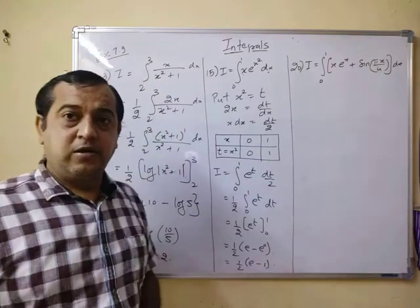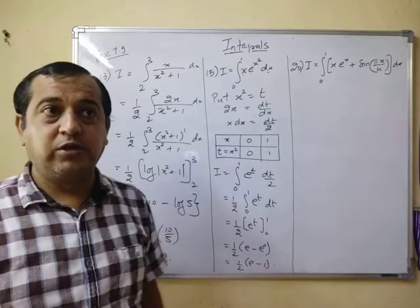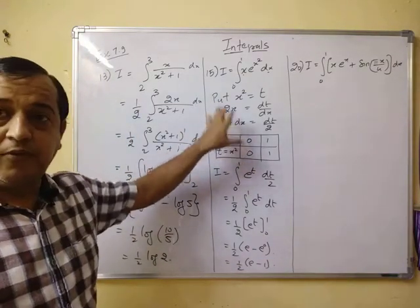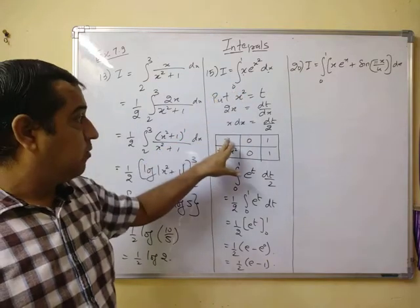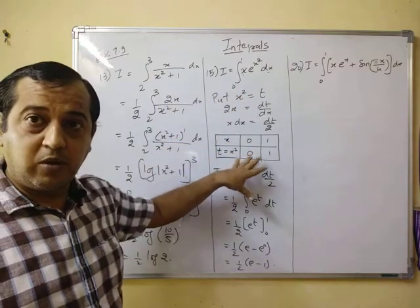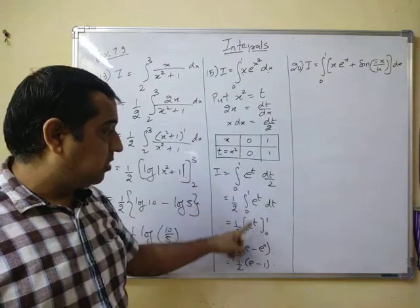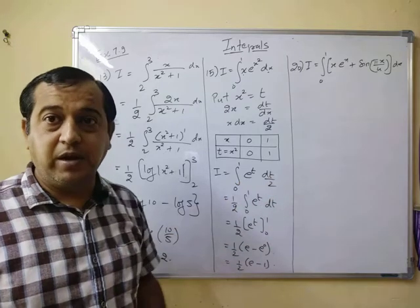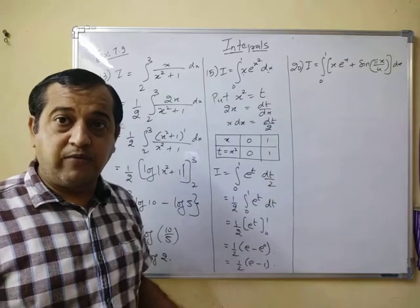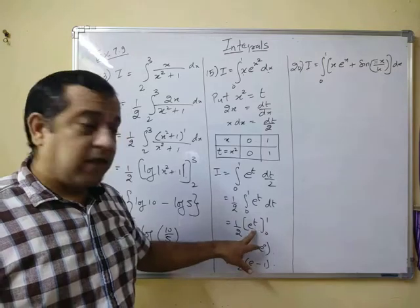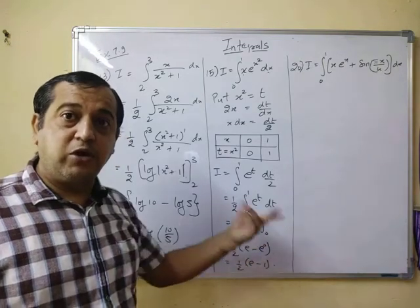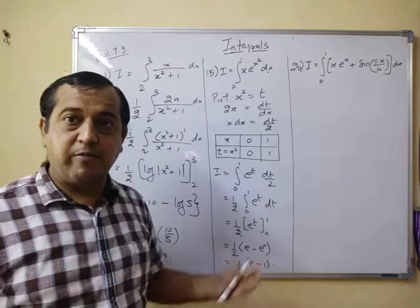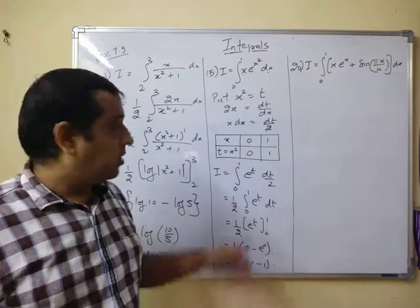Clear. In case of substitution you have to change the limits of new variable. You have to change the limits from old variable to new variable. One more thing, when you solve this here you can see you are getting the answer but there is no need to come back to the original variable x. Why? Because we have already changed the limits of x and now we are having the limits of new variable t.